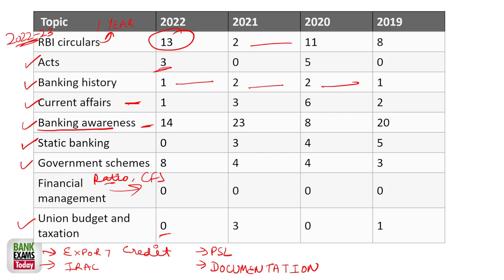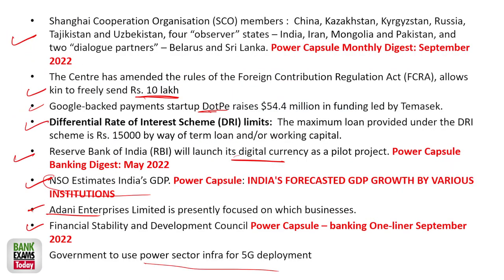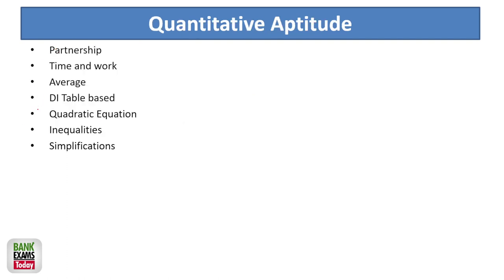Financial management takes a lot of effort. Moving forward to the English language section: para jumbles, reading comprehension, error correction, error identification, and replacing with suitable words are really important.